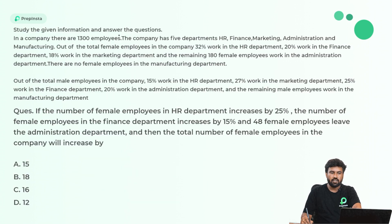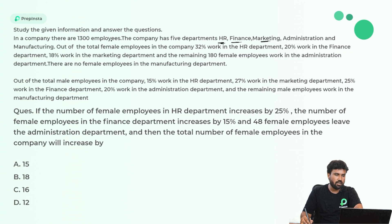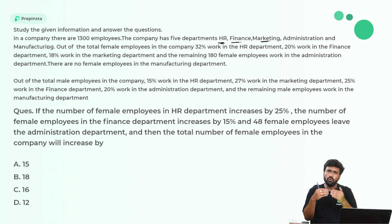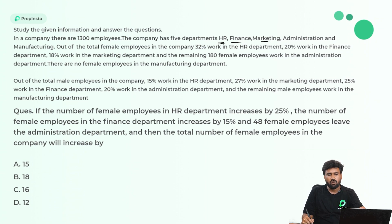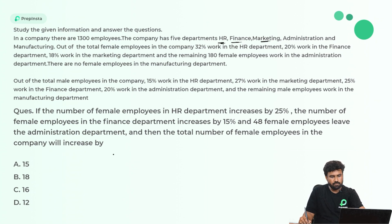Study the given information and answer the question. In a company, there are 1,300 employees across 5 departments: HR, Finance, Marketing, Administration, and Manufacturing. Whenever you have this type of huge data in advanced quantitative ability, always try to create a table quickly. This is a data interpretation related problem.